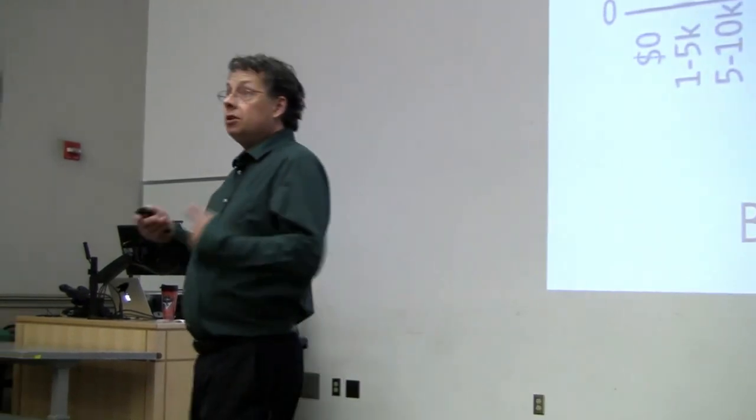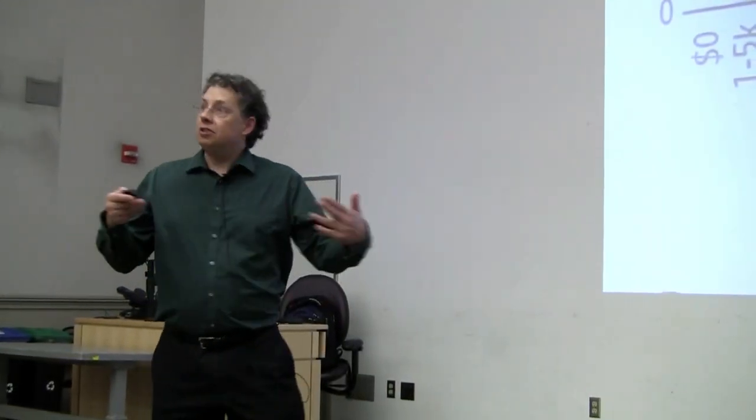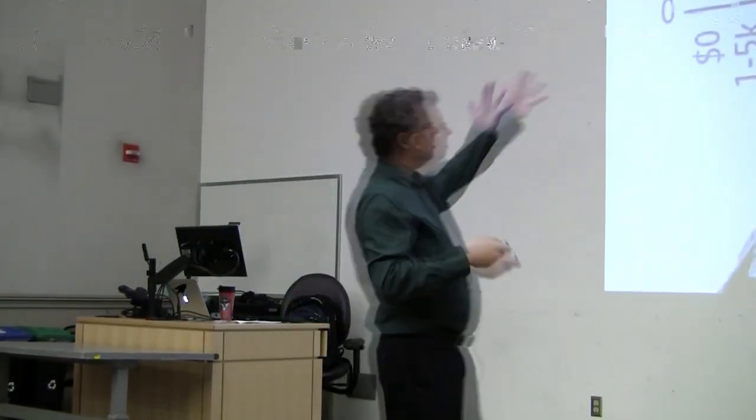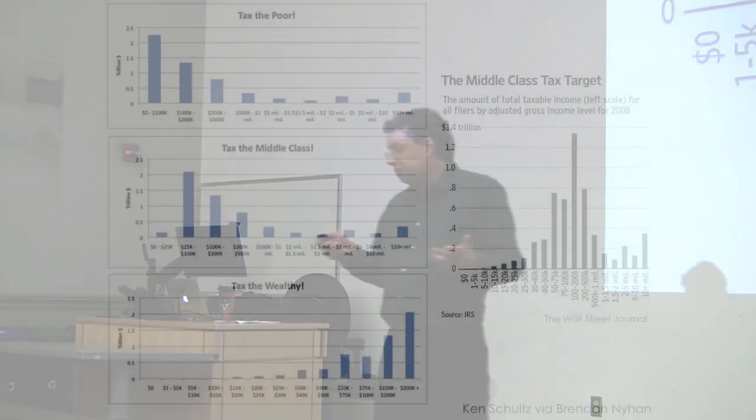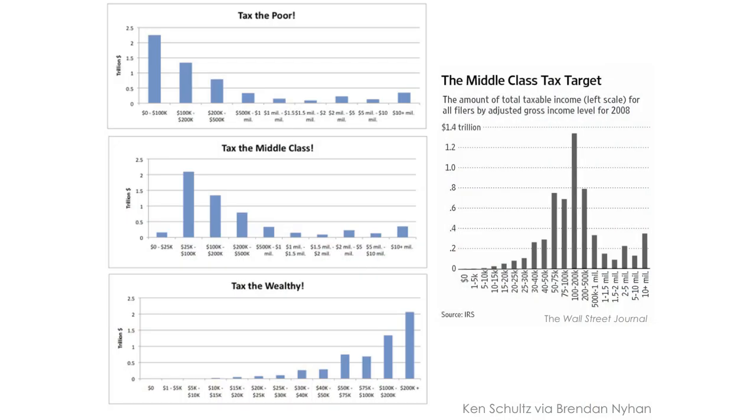And an economist looked at this and showed, if you're allowed to set the bins the way you like, I can use exactly this data to tell you any story I want to. And so he put together from these original data these graphs. So suppose you want to say, let's tax the poor. You set up a bin from $0 to $100,000. It's a little funny definition of poor, but you can still set up a bin like that. And that's where all the money is.